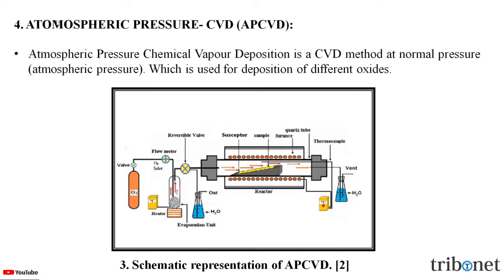Let us understand the definitions of all the chemical vapor deposition methods. Atmospheric pressure CVD is a chemical vapor deposition method operating at normal atmospheric pressure, used for deposition of different oxides. Here in figure 3, we can see the schematic representation of APCVD, where the desired gas is sent into the chamber containing a heating furnace, the desired material is deposited on the surface forming a thin film, and waste is sent out along with the exhaust.